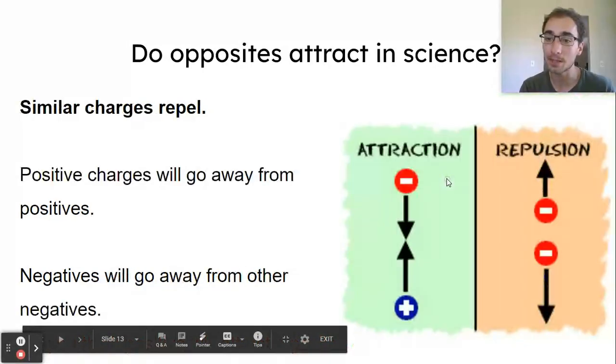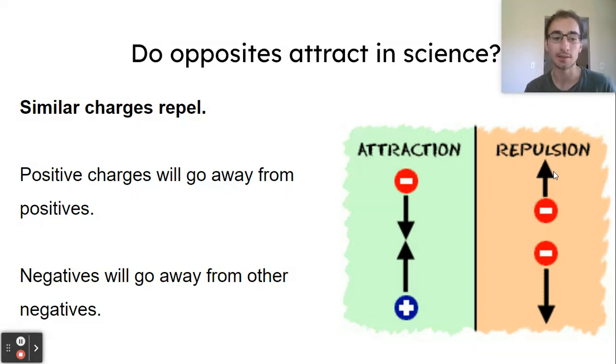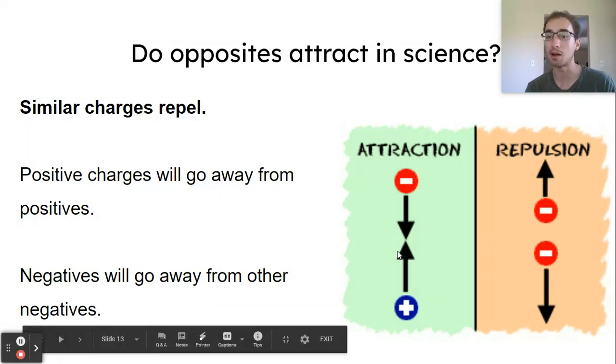But, if you have two positive, or two negative, they will repel. Repel means they'll go away. They'll go away from each other. That's repulsion. So those are what will happen if the two charges are similar. So, two negatives go away. Two positives will go away. But, opposite, those will go together. On the other hand.